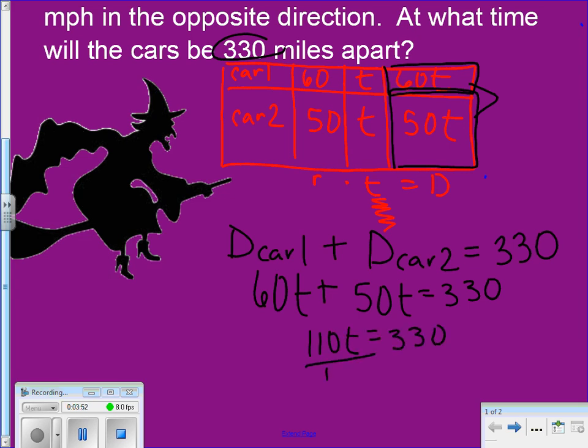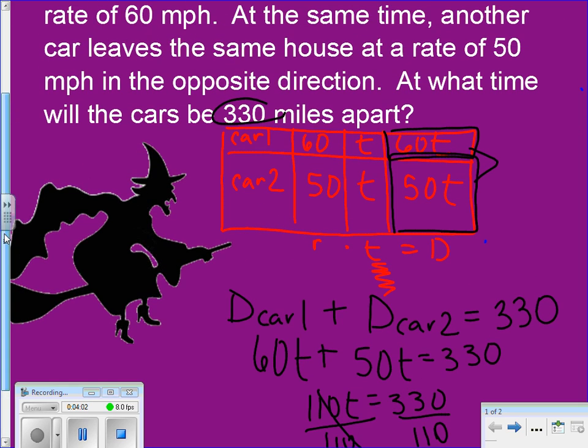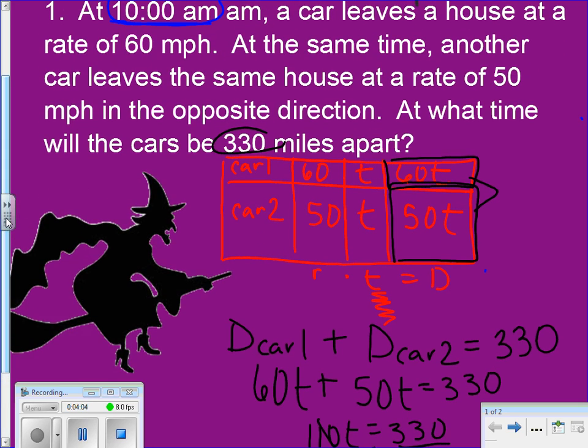And now dividing both sides by 110, t is equal to 3. Now stop, wait, hold the horses. That does not mean three o'clock. That means that three hours have passed. And at this three hour time period, the cars are 330 miles apart. Now what I need to know is, at three hours they're 330 miles apart, so what time would that be on a clock?